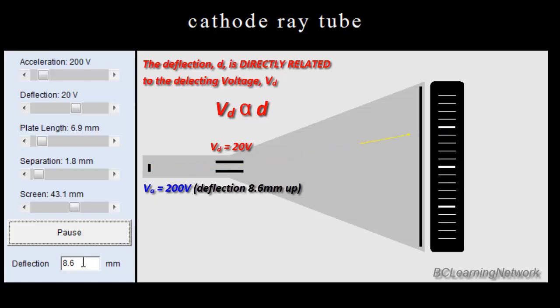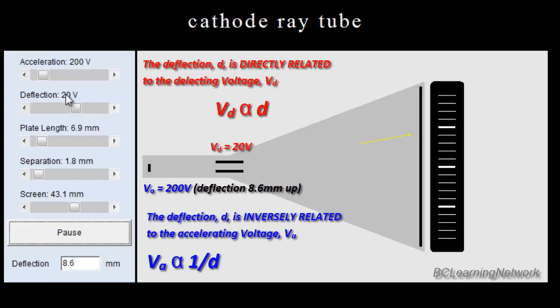So it's an inverse relationship. Half the accelerating voltage, double the deflection. So if I go back to 400, back to 400, we see that it's 4.3 millimeters. So if I double the voltage again, back to 400, I half the deflection.